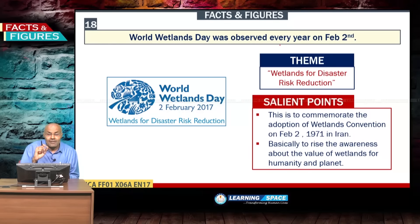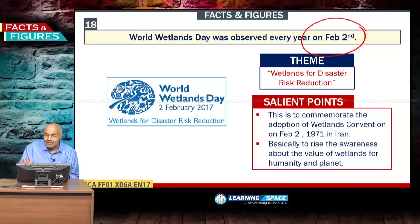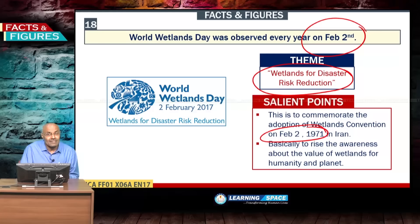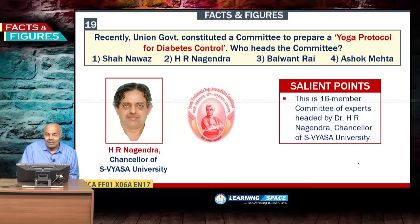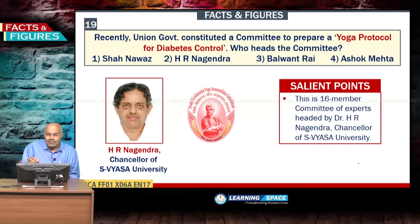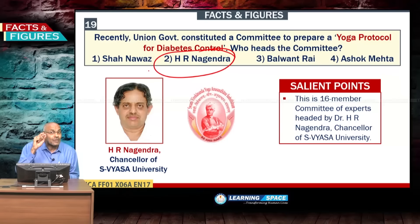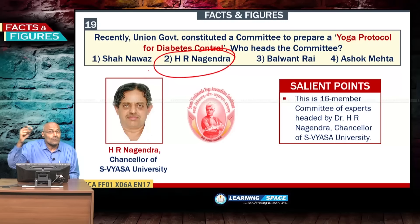World Wetlands Day is observed every year on February 2. This year's theme is 'Wetlands for Disaster Risk Reduction,' commemorating the adoption of the Wetlands Convention on February 2, 1971, to create awareness about the value of wetlands for humanity and the planet. The Union Government also constituted a 16-member committee headed by yoga expert H.R. Nagendra to devise a yoga protocol for diabetes control.